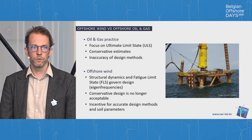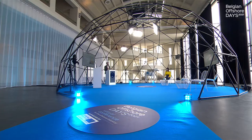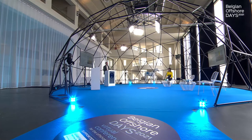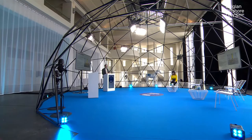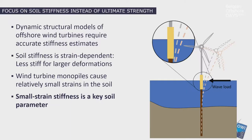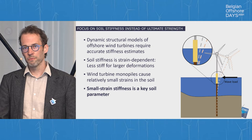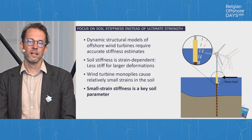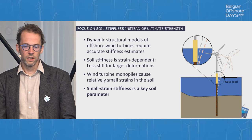Instead of conservative design methods, offshore wind necessitates accurate design methods. Given all the variability in geotechnical data, accuracy does not come easy, so there is a strong incentive to have the right parameters for accurate geotechnical design. Rather than looking at ultimate strength — how much load the soil can carry — we are now more interested in the soil's stiffness. Stiffness is a difficult parameter for soil because soil is a granular or plate-like material that behaves differently depending on the stress level imposed on it.